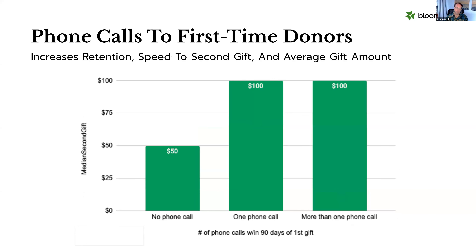The reason speed to second gift matters: your first-time donors are only retained about 20% of the time, but once they become a repeat donor they're retained 60% of the time. The faster we get them from first gift to second gift, the better our retention rate. By making two phone calls we can go from three-quarters of a year to two months — let's do that. The last area we looked at at Bloomerang was the size of the second gift, and in line with what Penelope Burke found, it doubles. Three wins just by jumping on the phone.